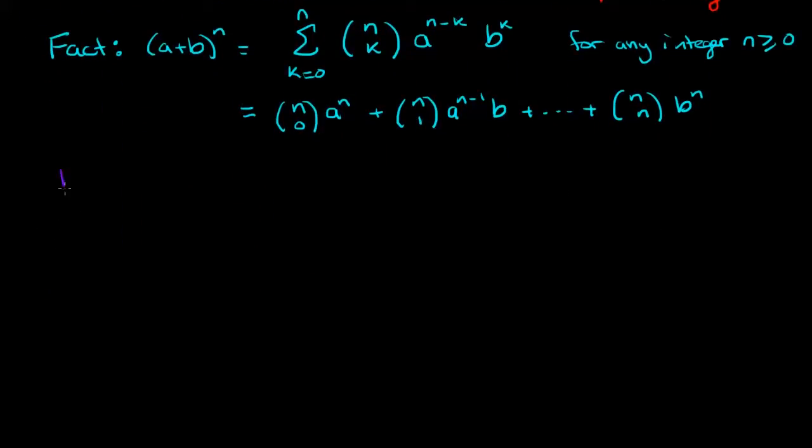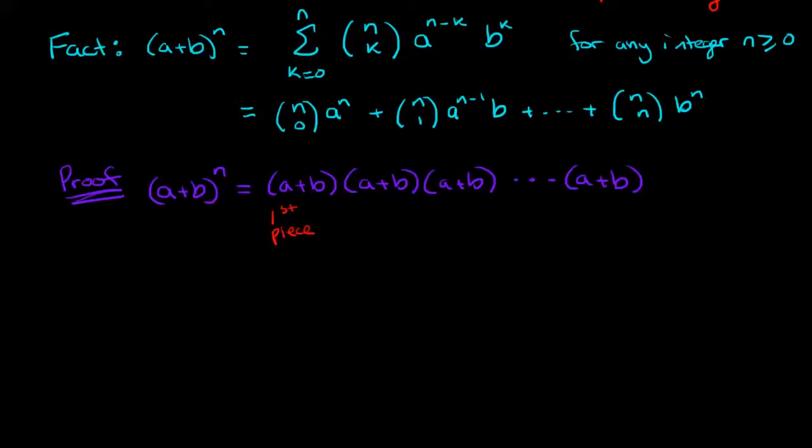So here's the proof. Let's start by writing out what a plus b to the power of n means. It means take a plus b times a plus b times a plus b and keep going until you've done that n times. So I'm going to call this first one the first piece and this second one the second piece, the third piece, and then up to the nth piece.